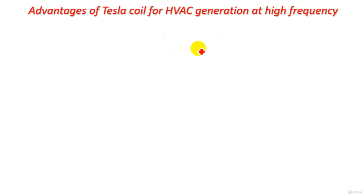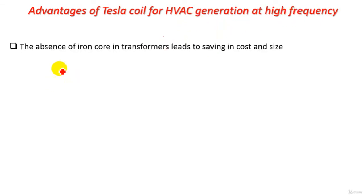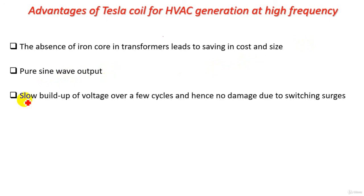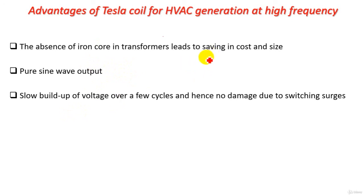The main advantage of the Tesla coil for high voltage AC generation at high frequency is the absence of an iron core, leading to savings in cost and size. Additionally, a pure sine wave output is produced with damped oscillations, there is a slow build-up of voltage over a few cycles, and hence no damage due to switching surges, since capacitor C1 charges slowly and discharges very fast.